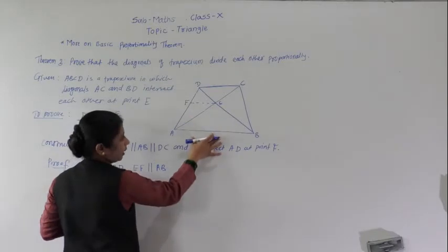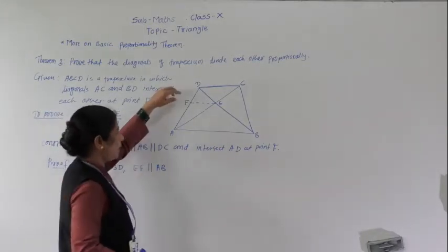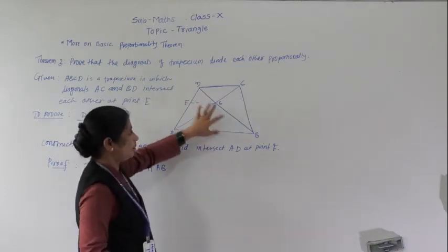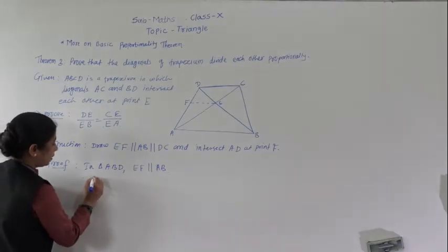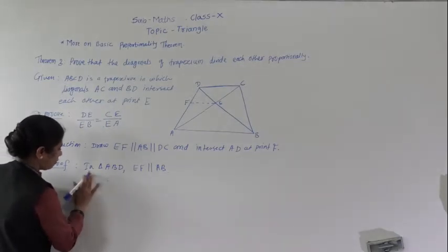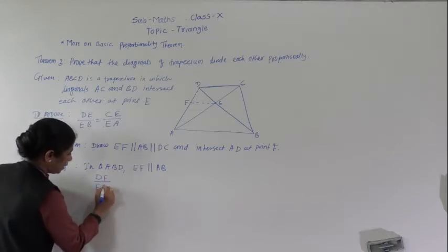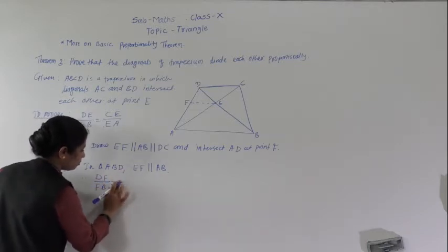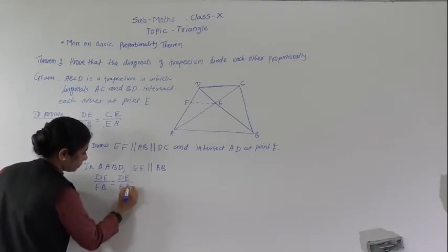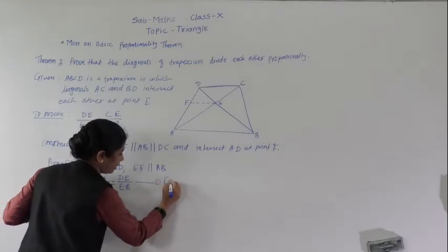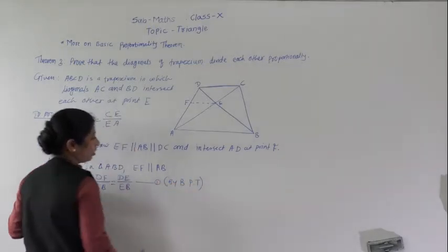This is the first statement by BPT. Again, since EF is also parallel to DC, in triangle ACD, EF is parallel to DC. By BPT, DF upon FA equals CE upon EA.